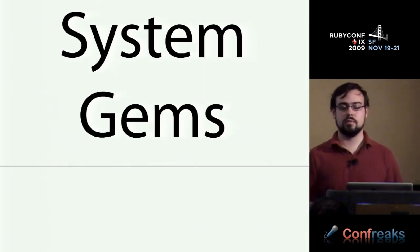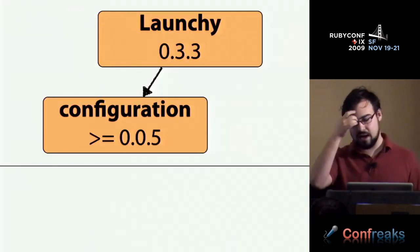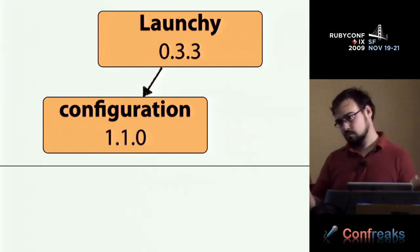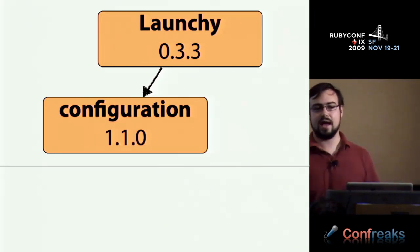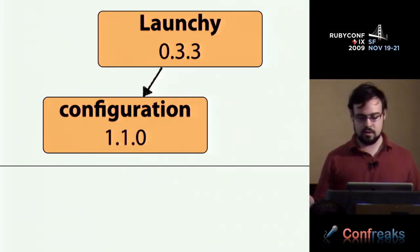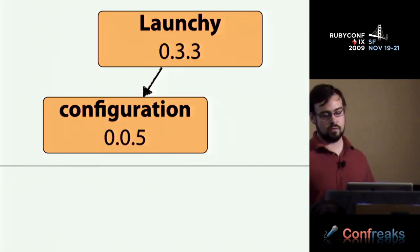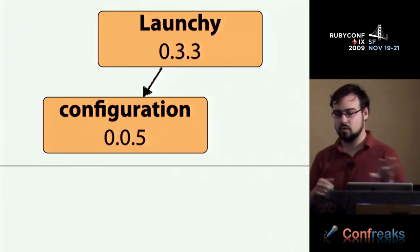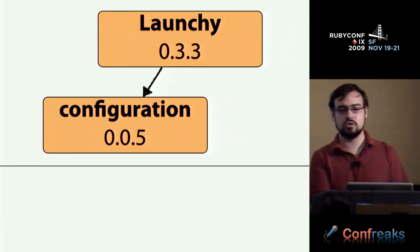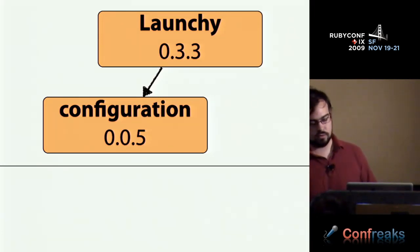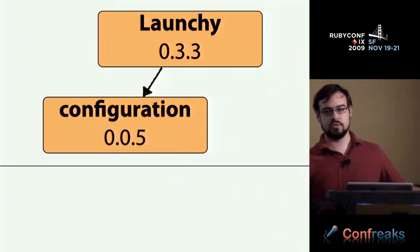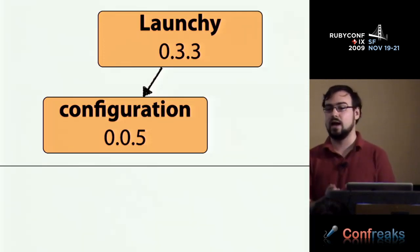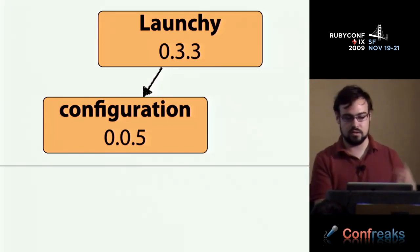The second related problem is usage of system gems in general for applications. You might have a dependency in your application for launchy 0.3.3, which requires configuration >= 0.0.5. You might have launchy 1.1.0 on your system — everything is great when you develop your app, but when you give it to someone who has an old version of configuration, and you were depending on some newer feature, everything breaks in a way that's not clear. You don't actually know anything about configuration — you just installed launchy. There's a chicken and egg thing: how do you figure out what's generating these weird problems?